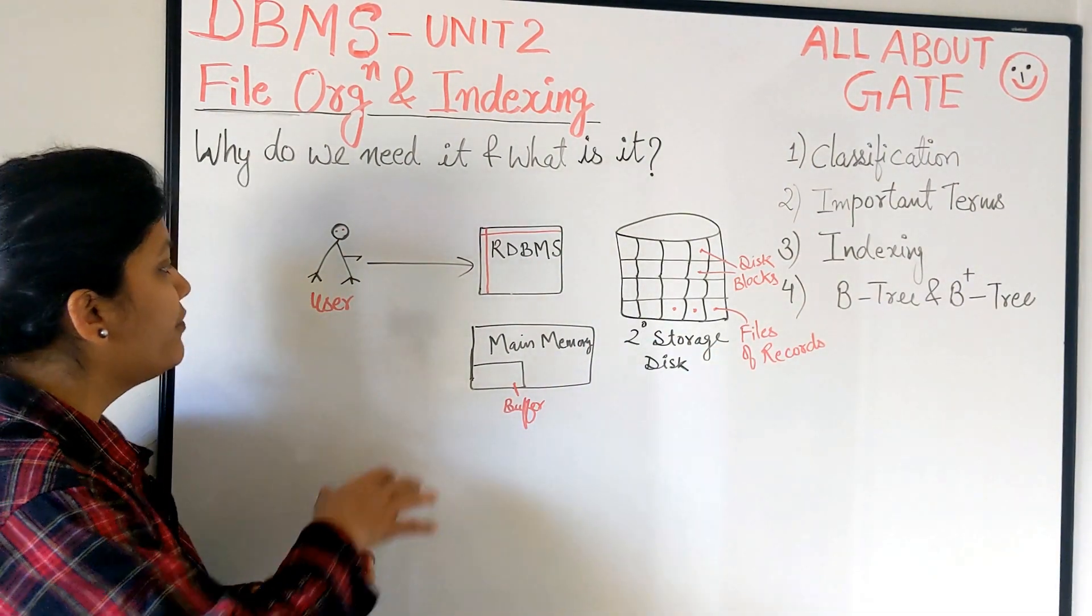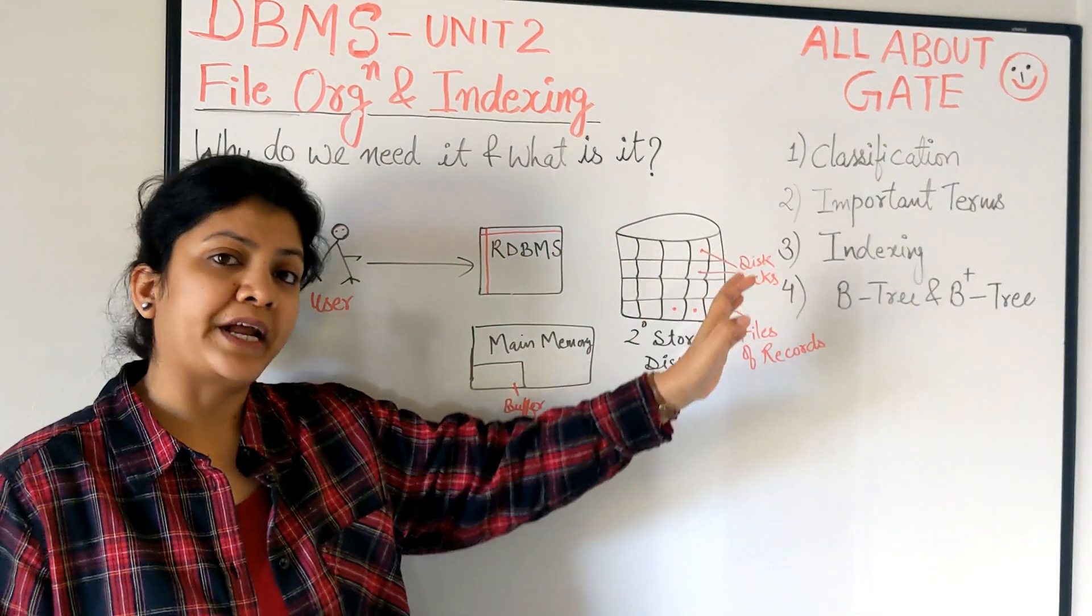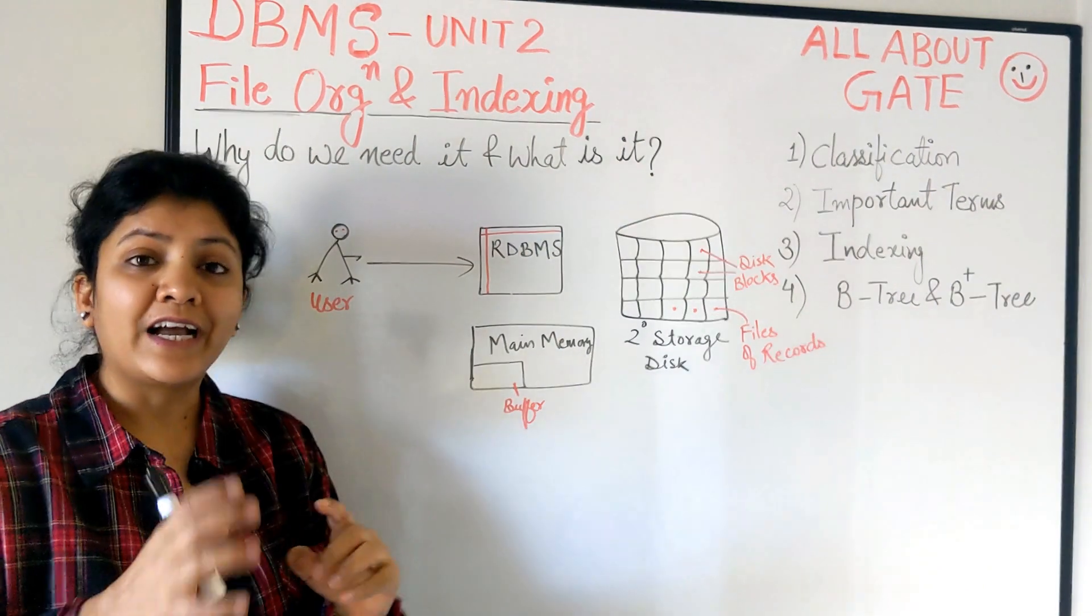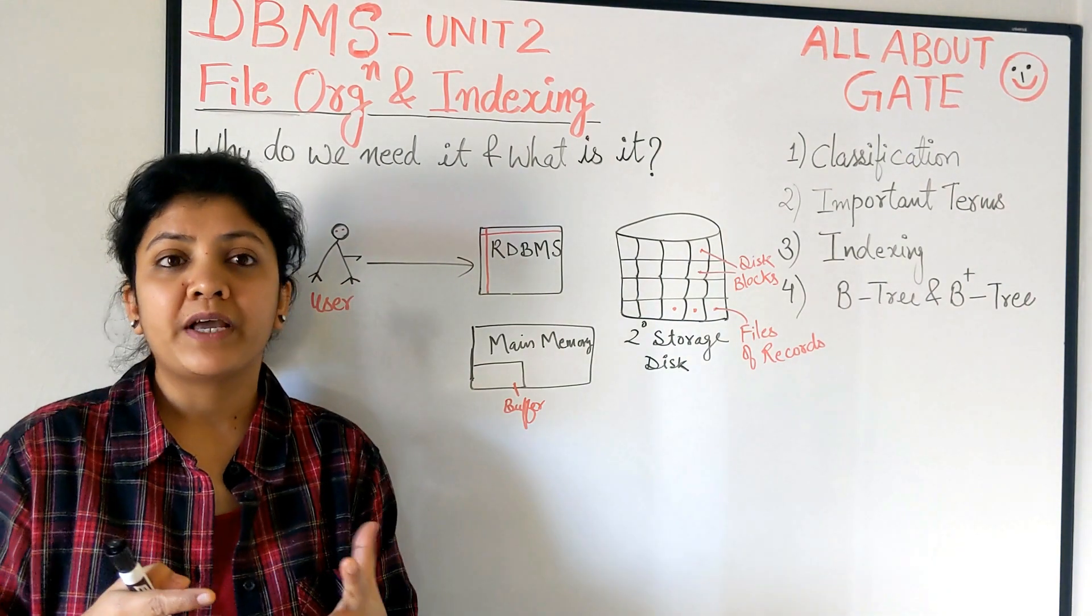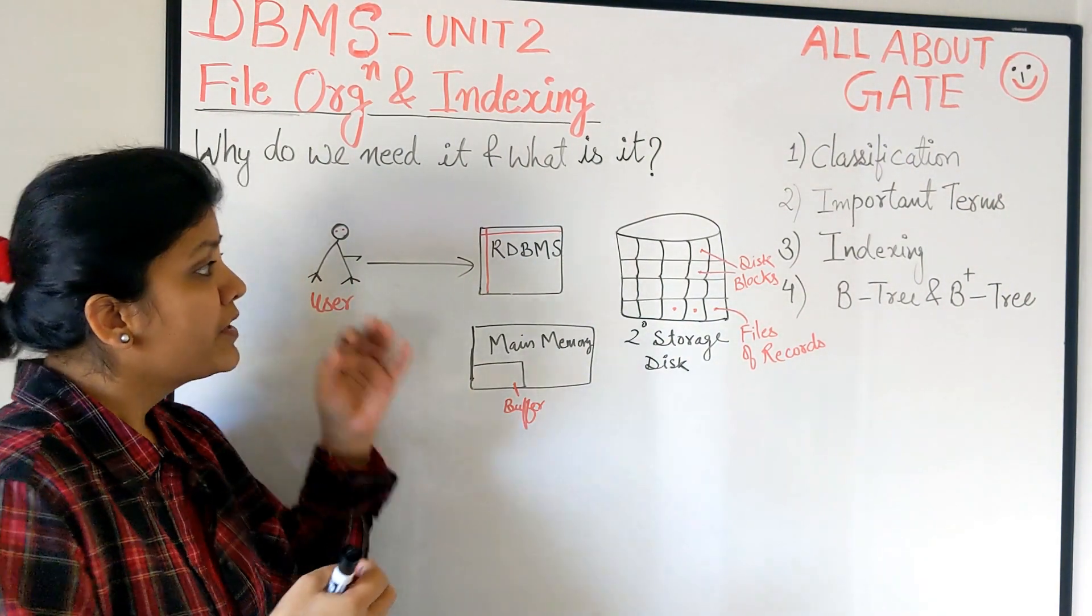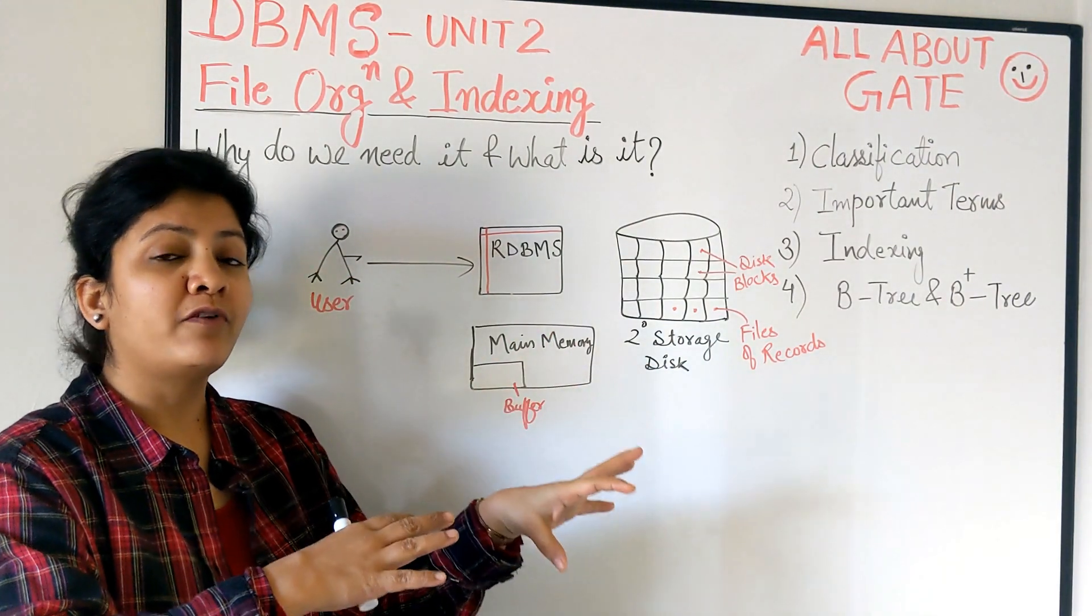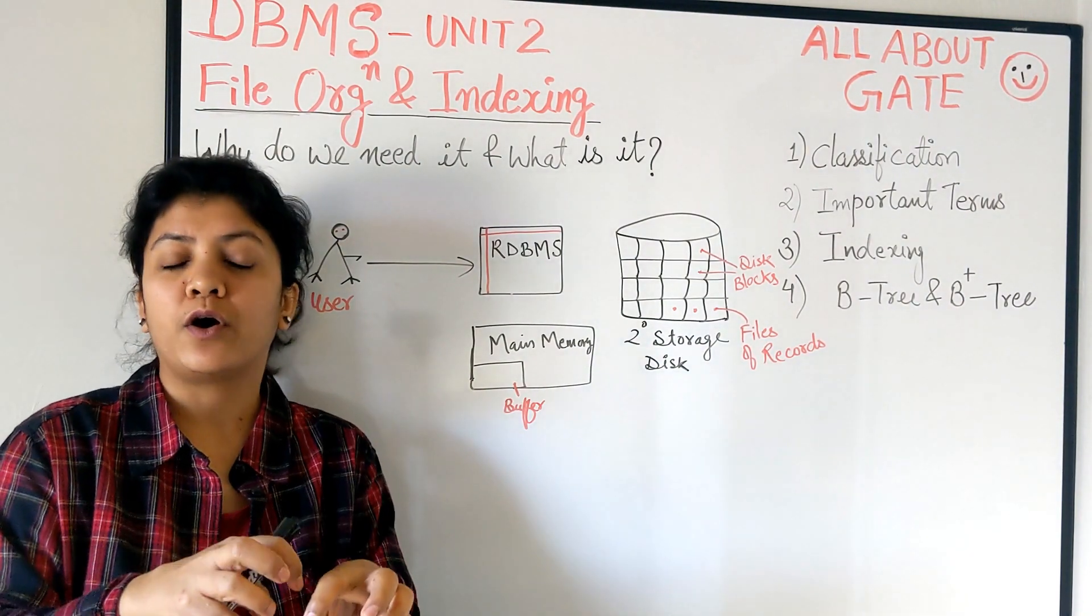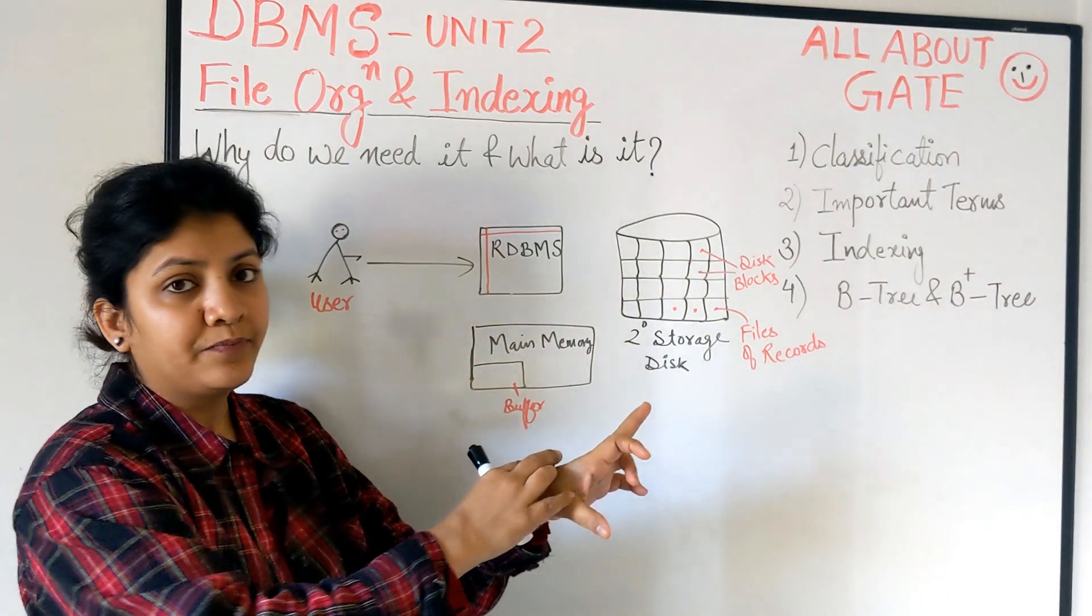Being the user, we give our query to the DBMS who on our behalf will try to locate the data and provide it. The data which we consider as a table is actually a logical collection of records. The data on the disk is actually stored in the form of a collection of records, which is a file.